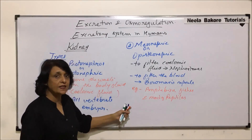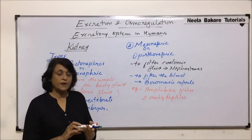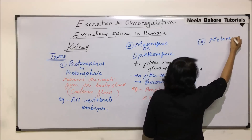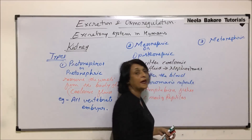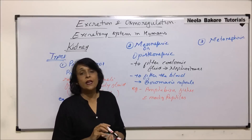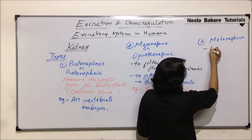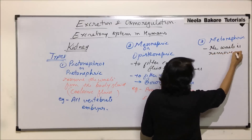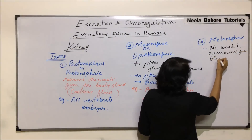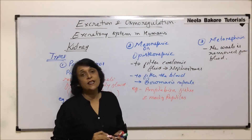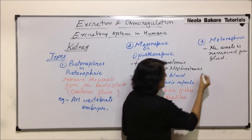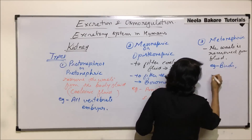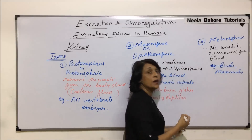Some reptiles have the third type of kidney, which is the meta-nephric kidneys or meta-nephros. Here it is only the blood which is filtered, so nitrogenous waste is removed from the blood alone. This type of kidney is found in birds, mammals, and humans.